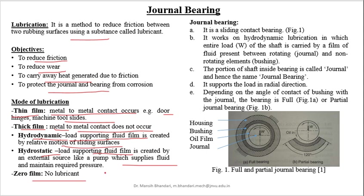Zero film lubrication is also defined where there is no lubricant. Now let us understand journal bearing. It is a sliding contact bearing. It works on hydrodynamic lubrication in which the entire load of the shaft is carried by a film of fluid present between the rotating and non-rotating elements. The rotating element is the shaft, which is called the journal. The portion of the shaft inside the bearing is called the journal, and hence the name journal bearing. It supports load in radial directions.